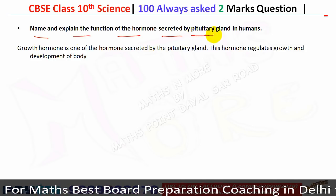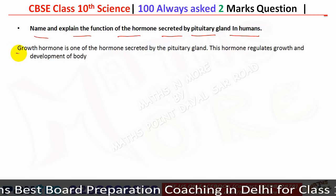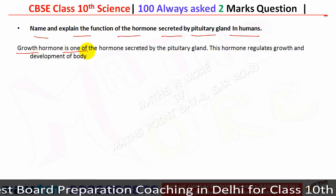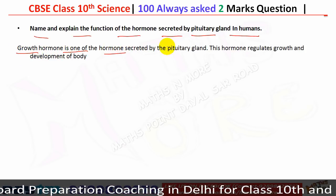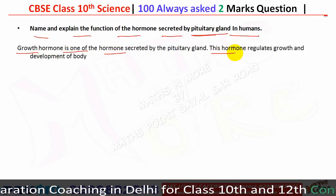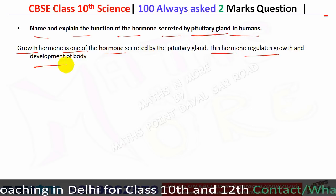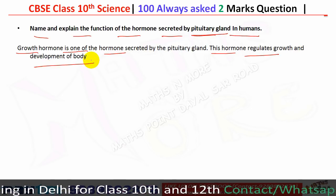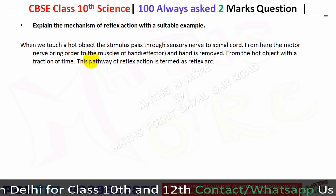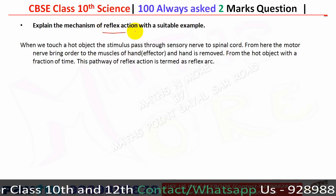The pituitary gland secretes growth hormone. This hormone regulates the growth and development of the human body.